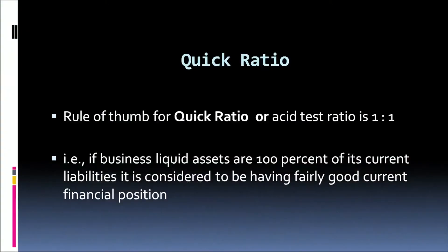Therefore, we have clearly defined that 100% of quick assets compared to our current liabilities is the rule of thumb and an ideal position for a firm.